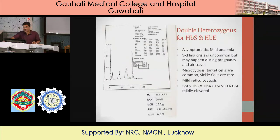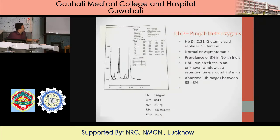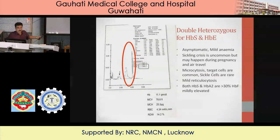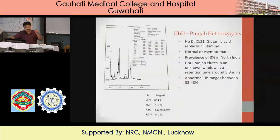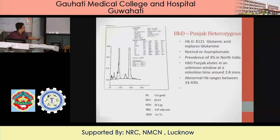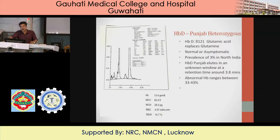Double heterozygous of HbS and HbE: you will get a high A2 (where HbE replaces A2) and a peak in the S window. These two are very specific, so the diagnosis is easier. High A2 corresponding to HbE and high S corresponds to HbS — this is double heterozygous of HbE and HbS. For HbD Punjab trait: an abnormal peak of about 30–40% concentration at retention time around 3.78 minutes identifies it as HbD Punjab heterozygous. Usually asymptomatic; about 3% of North Indian population have it; hemoglobin is absolutely normal.